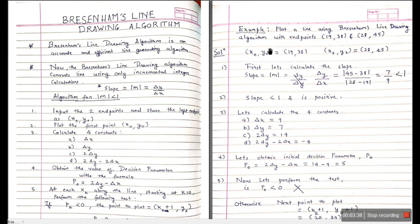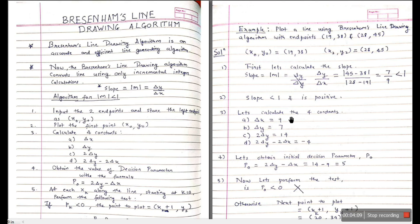The first thing is to find the slope. Slope is |y2 - y1| / |x2 - x1|, that is |45 - 38| / |28 - 19|, which is 7 divided by 9. This is less than 1 and positive, so we use this algorithm.